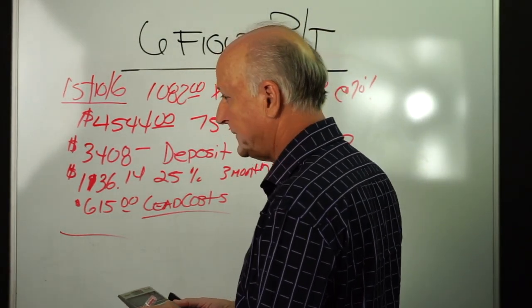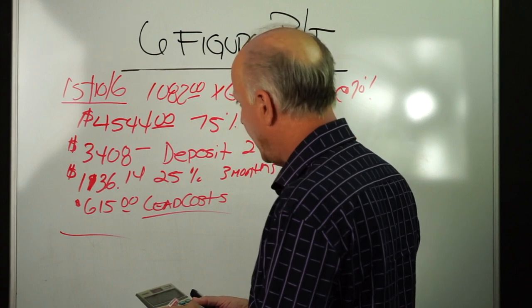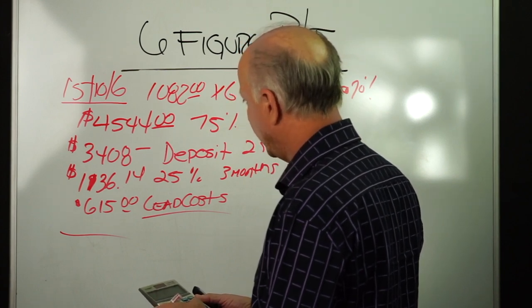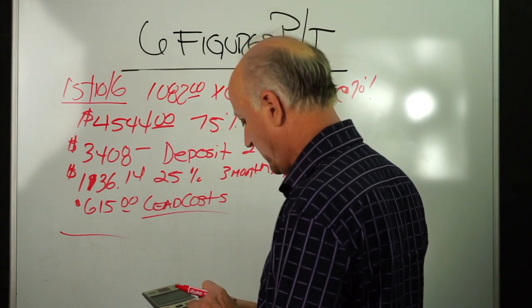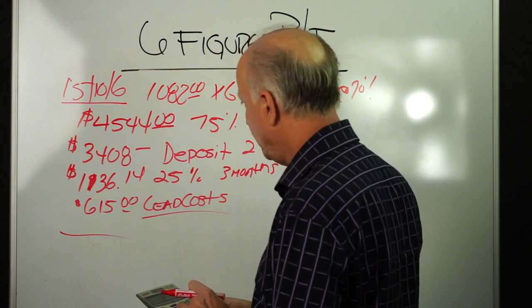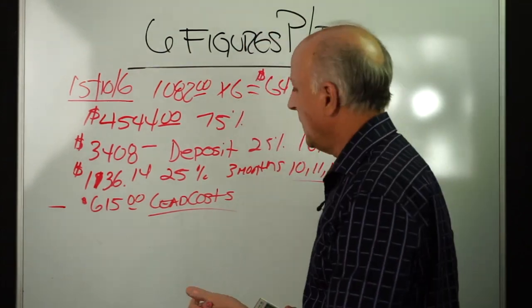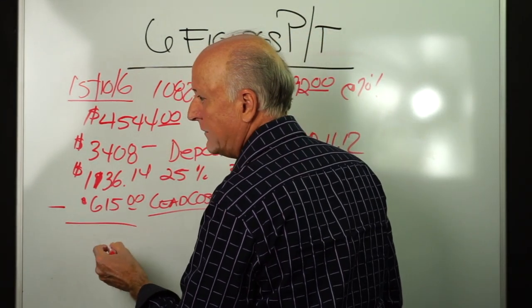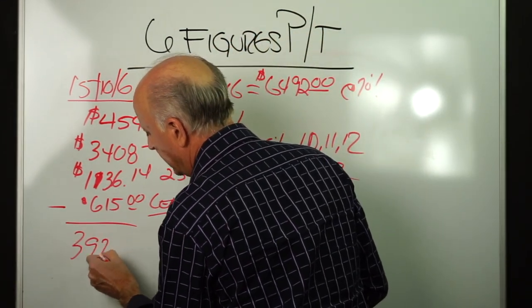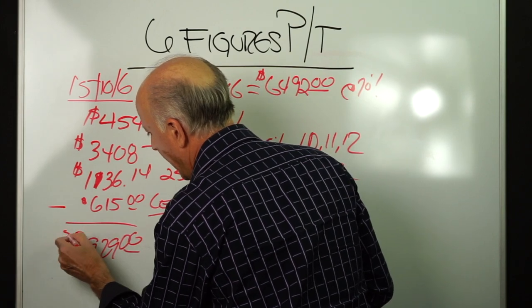So what do we have here? Okay, we've got $3,408 plus the $1,136.14, and then minus the $615 lead cost. So that gives us a figure of $3,929 net.